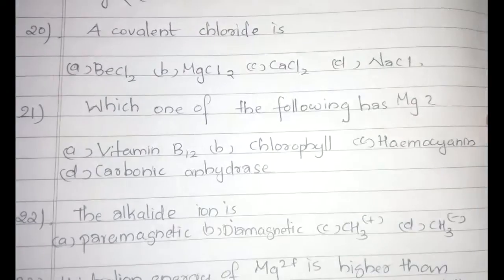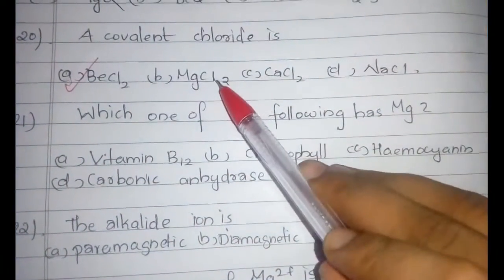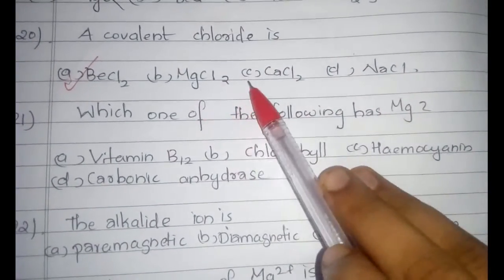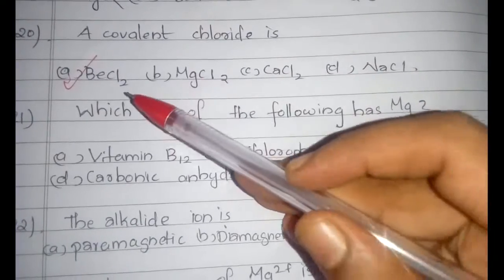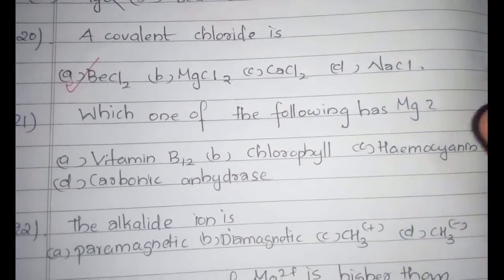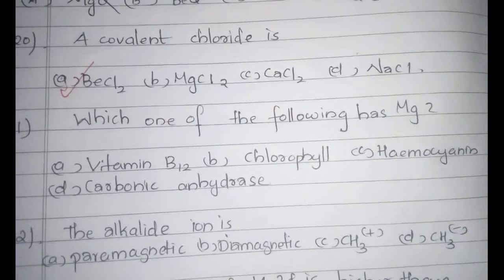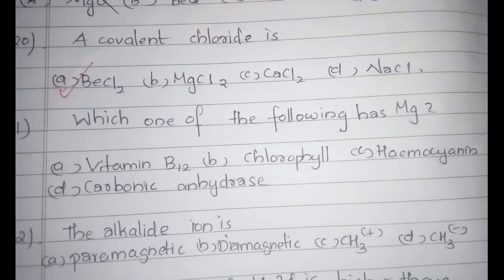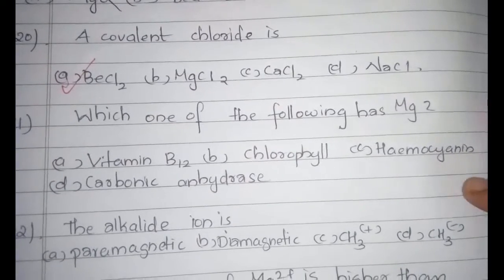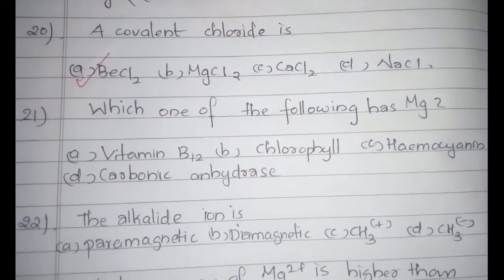The next question: the covalent chloride among these is BeCl₂. MgCl₂, CaCl₂, and NaCl lose electrons toward the chlorine atom to form ionic bonds. But BeCl₂ is extremely small in size and therefore has lesser tendency to lose electrons to Cl⁻, so it forms a covalent chloride rather than an ionic one.